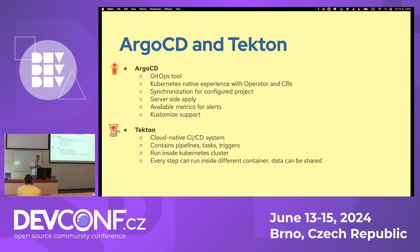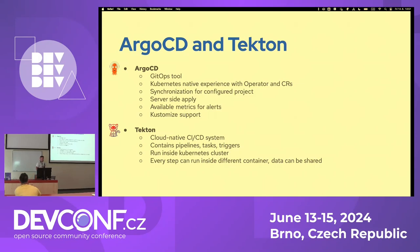Tekton is cloud-native, so the whole pipeline runs inside the Kubernetes cluster as a pod. The pod can be multi-container, so every step can be split into separate containers. A simple example: your pipeline needs to clone the repository and run a Maven build. The first step uses a minimal Git container and the second uses a heavier container for the Maven build. You don't need to build one big container with all the tools needed for your pipelines.